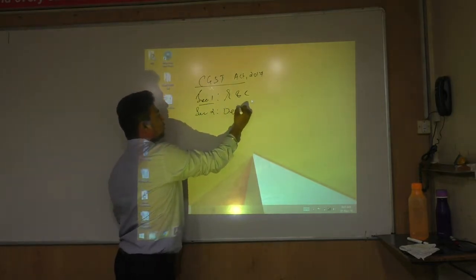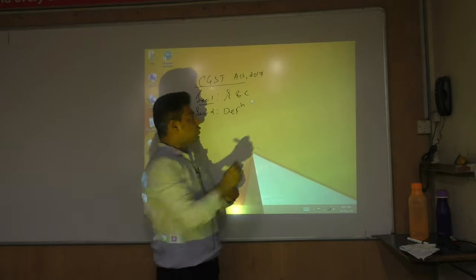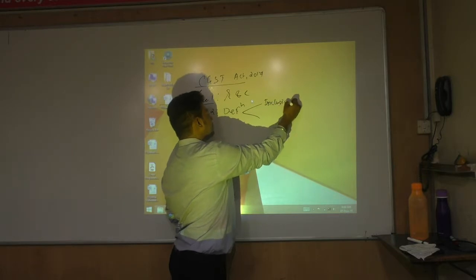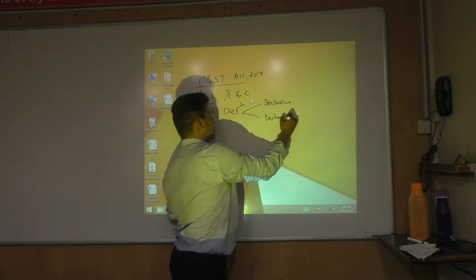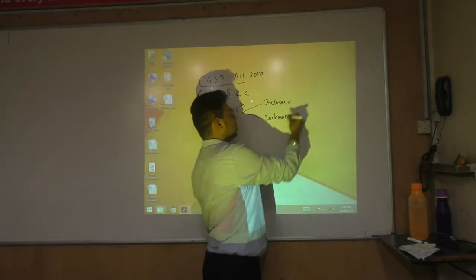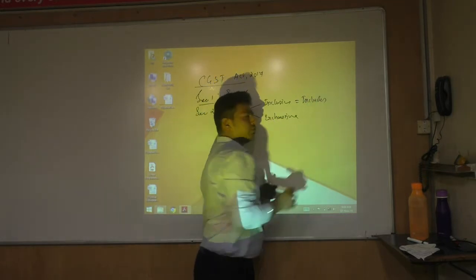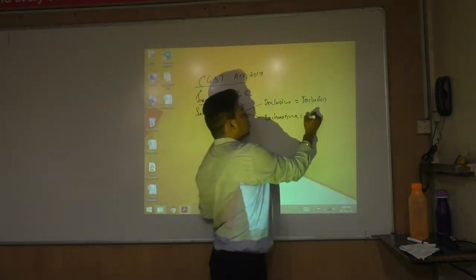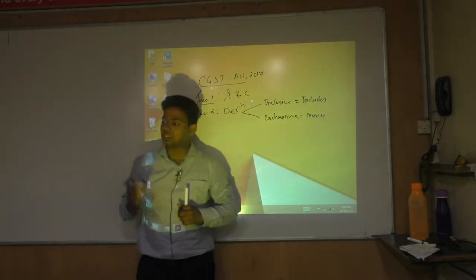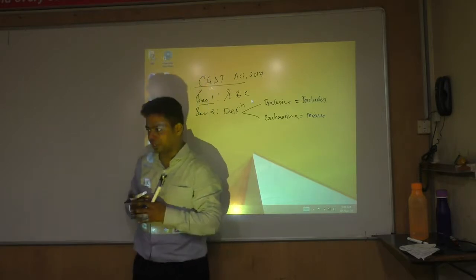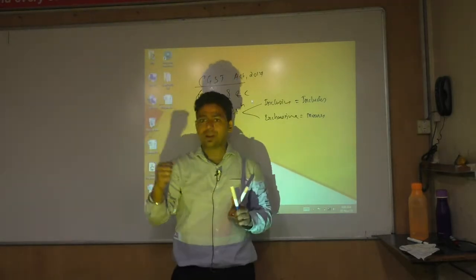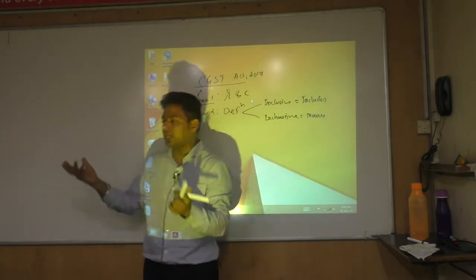Section 2 is about definitions. There are two types of definitions we will usually discuss: inclusive definition and exhaustive definition. An inclusive definition will start with the word 'includes', whereas an exhaustive definition will start with the word 'means'. Whenever a definition starts with 'means', it is a very strict definition — you cannot dilute its meaning. Whenever a definition starts with 'includes', like the supply definition, it is a broader, inclusive definition.